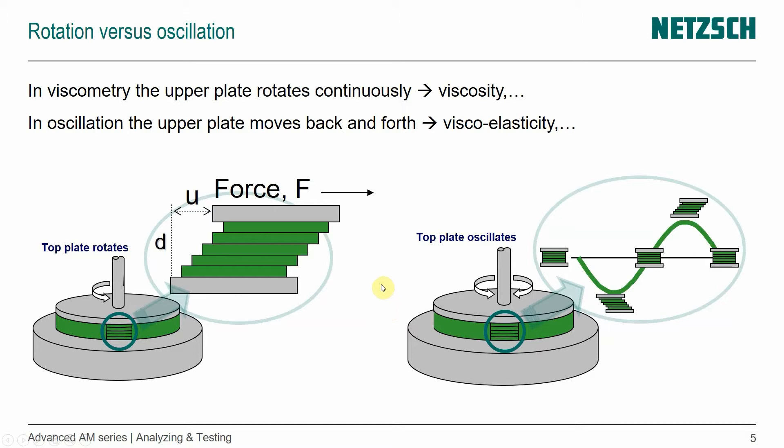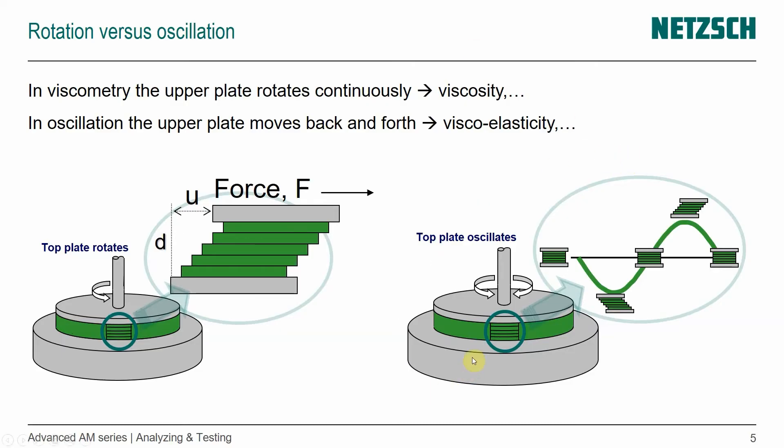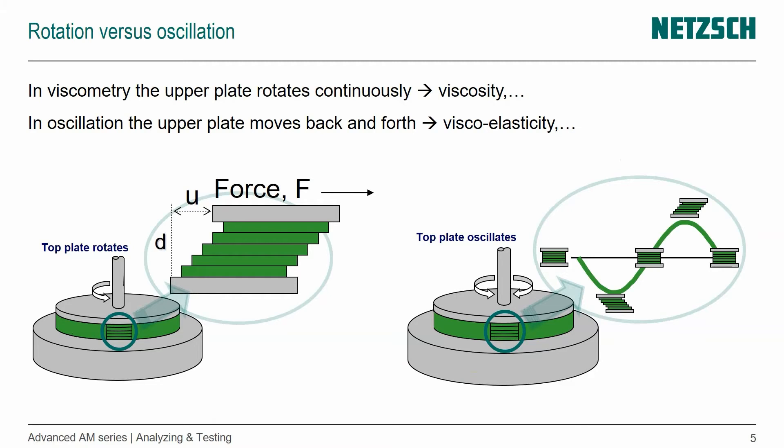The viscosity we get when we do a rotational rheometer, so viscometry where the upper plate rotates continuously. And then we also have that case where the upper plate moves back and forth. We have an oscillation and that gives us the viscoelasticity.